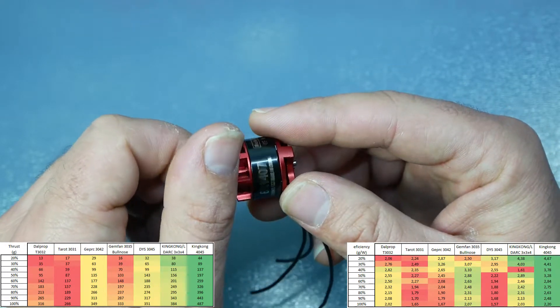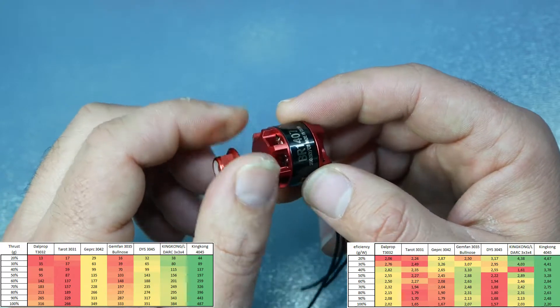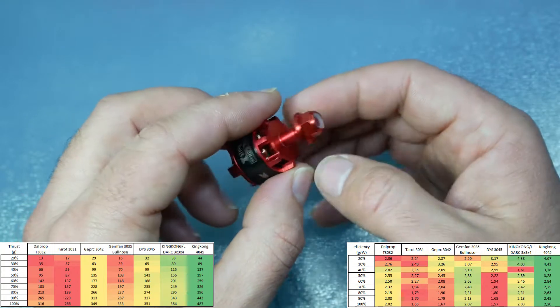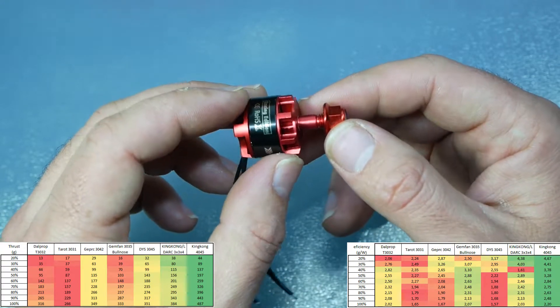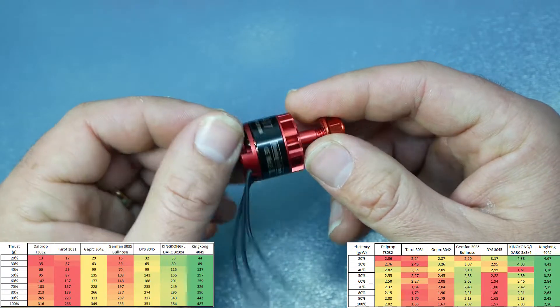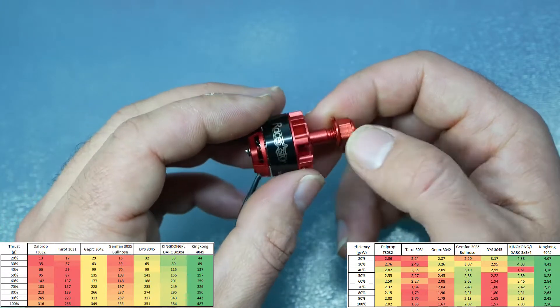You should pay attention to the weight, because if you have a heavy 3-inch or 4-inch build, this may not deliver the amount of thrust that you need. If you have 380 grams per motor, you should not have too much weight on the quad.